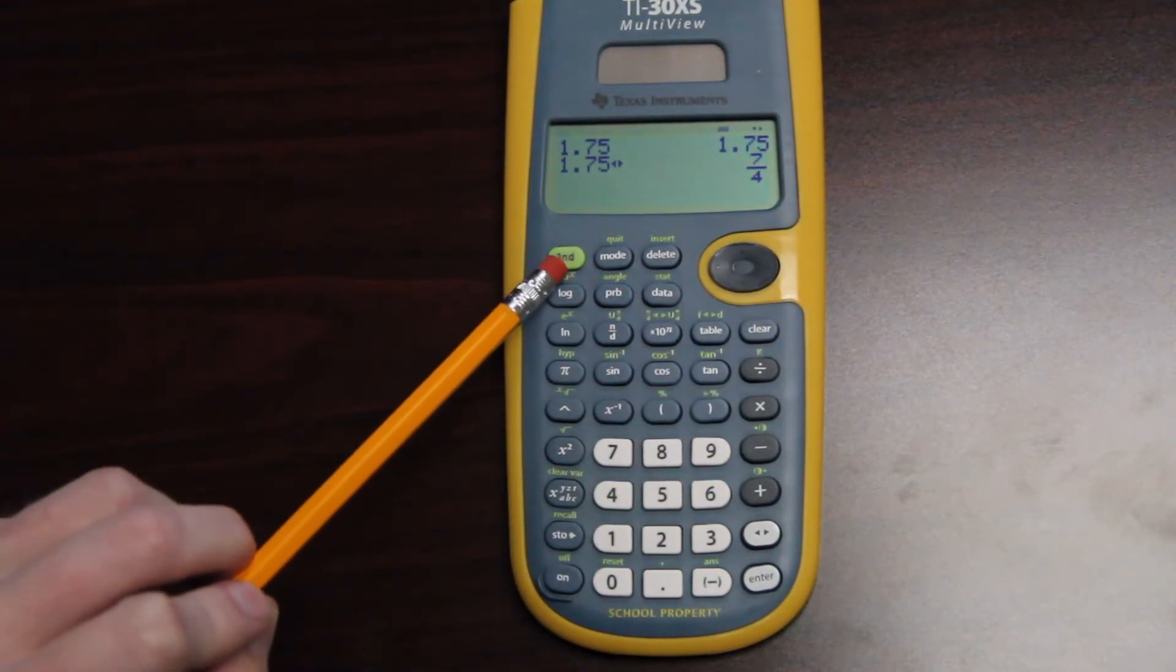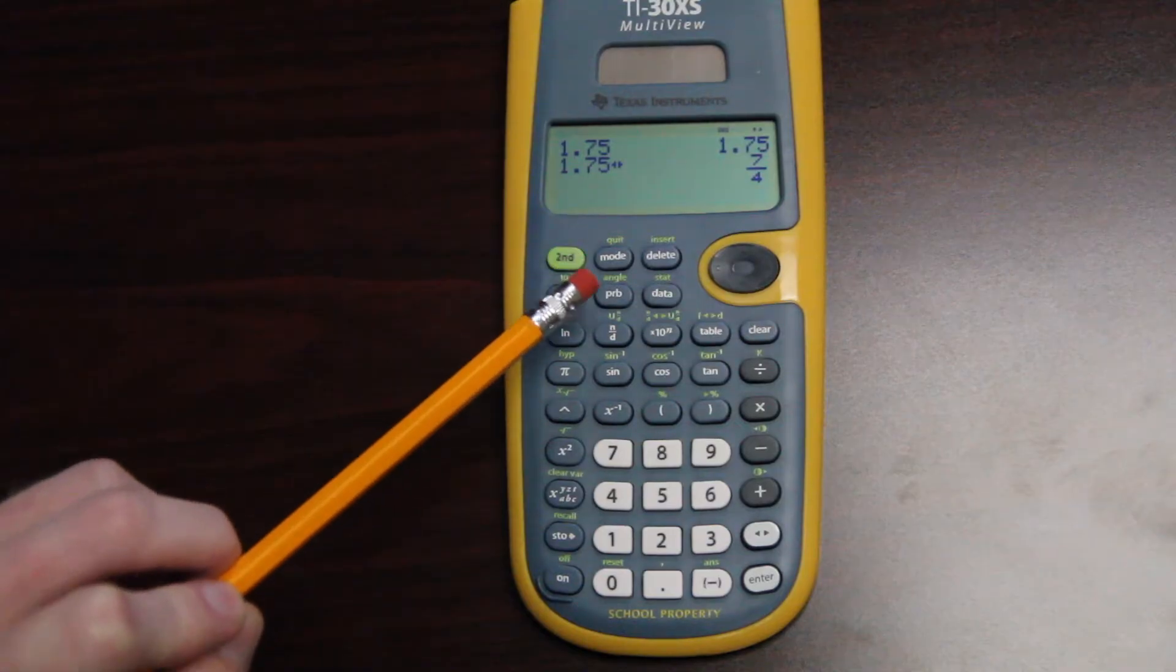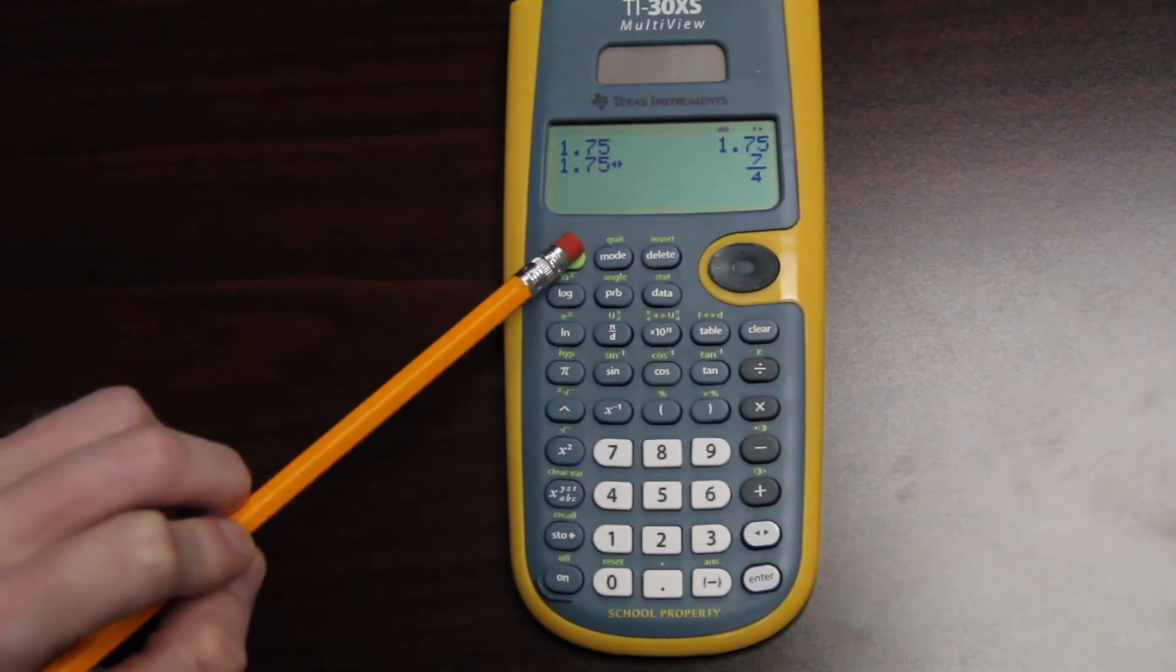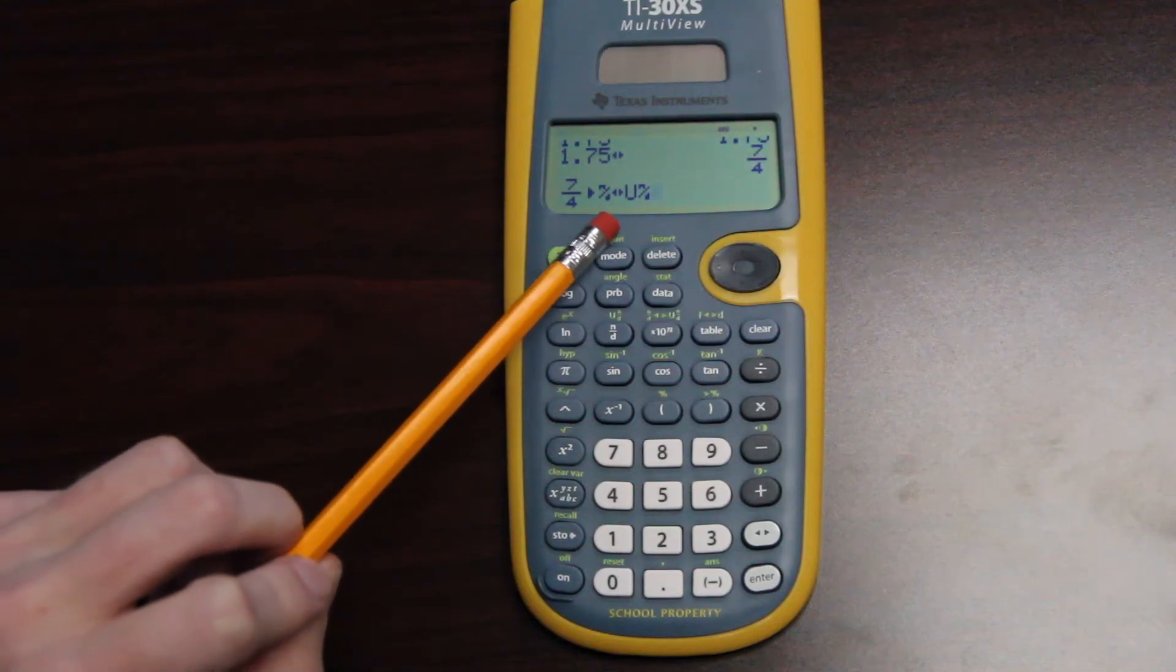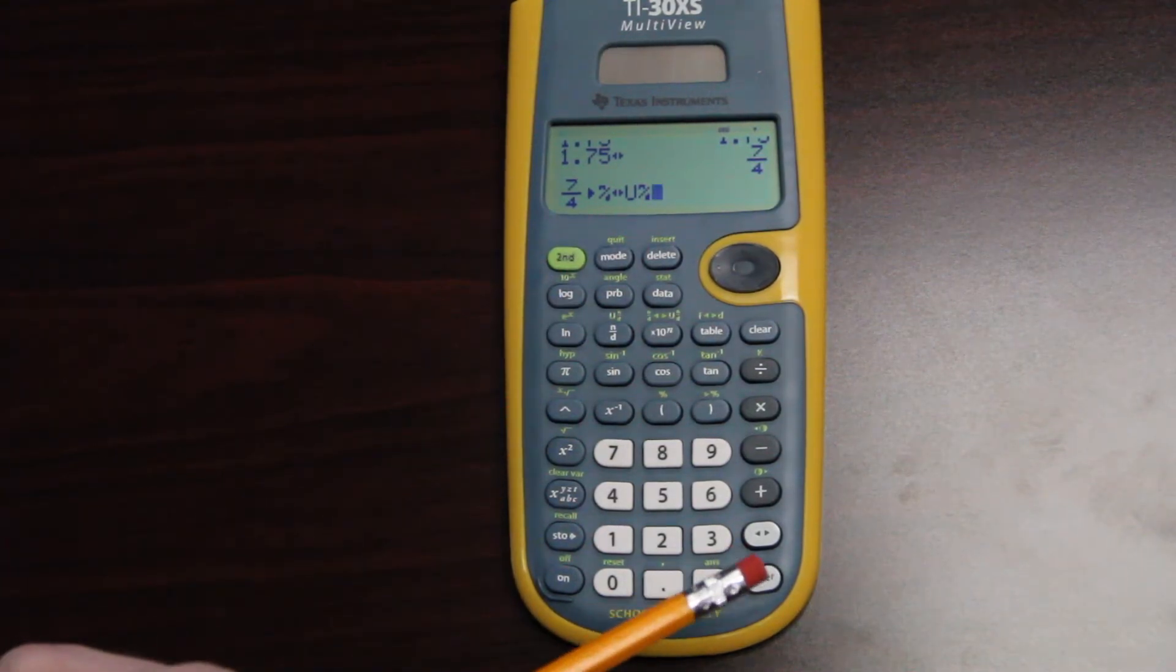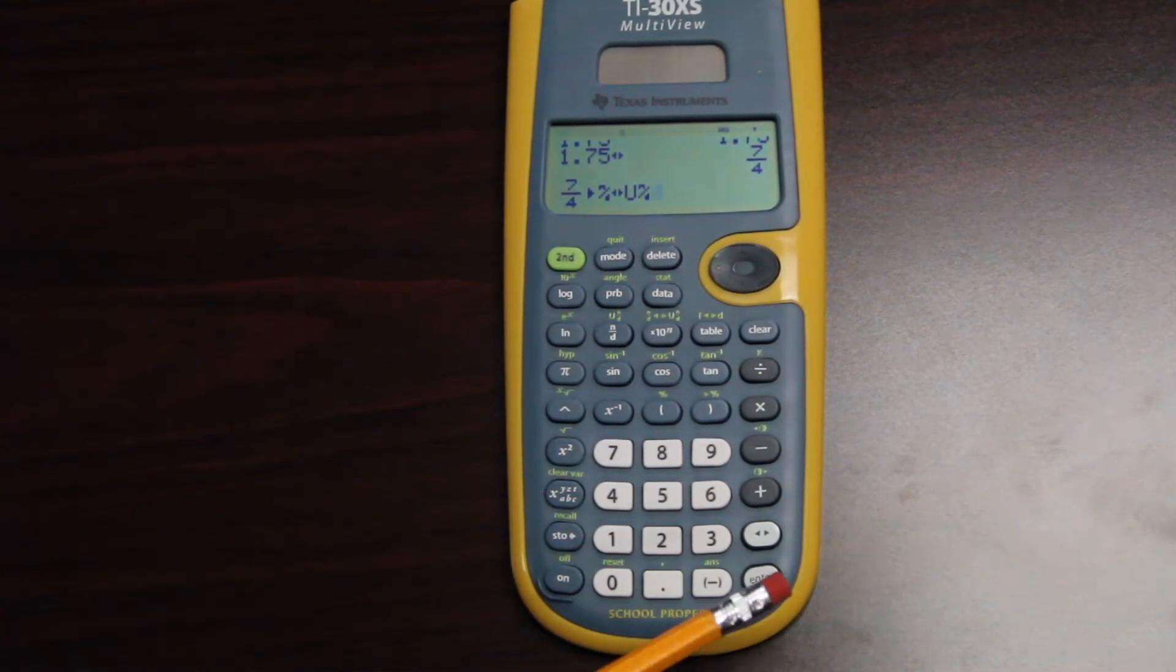So I would hit the second key, and then I would hit the times 10, and you see it says change the fraction to a mixed number, and I hit enter. And it turns into one and three-fourths.